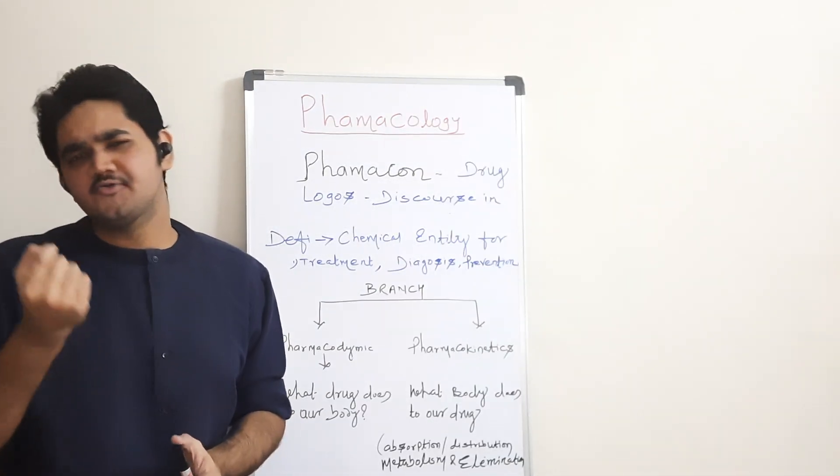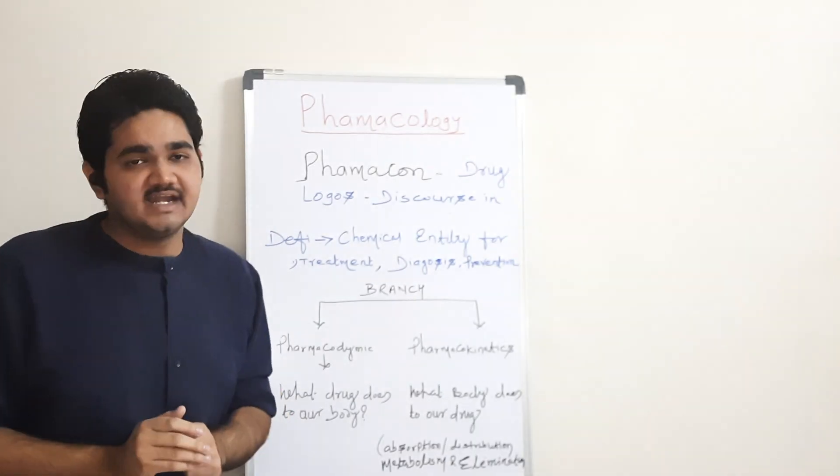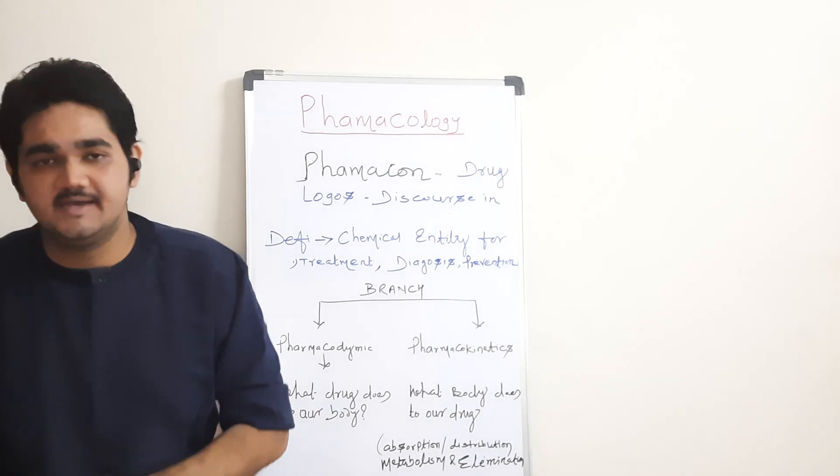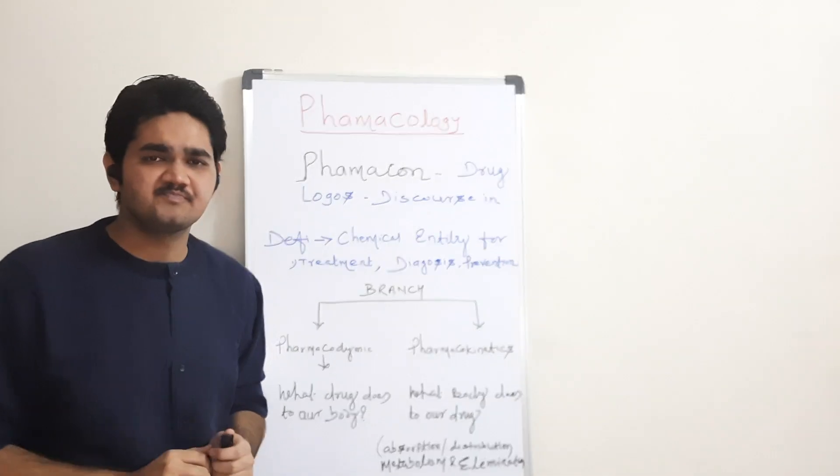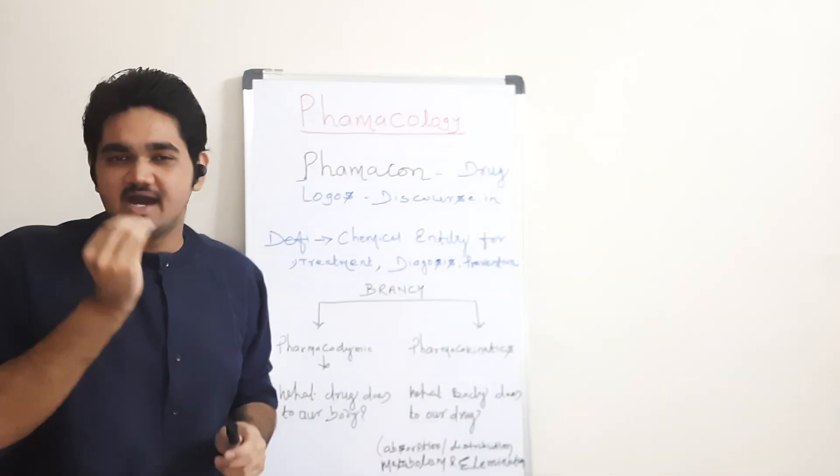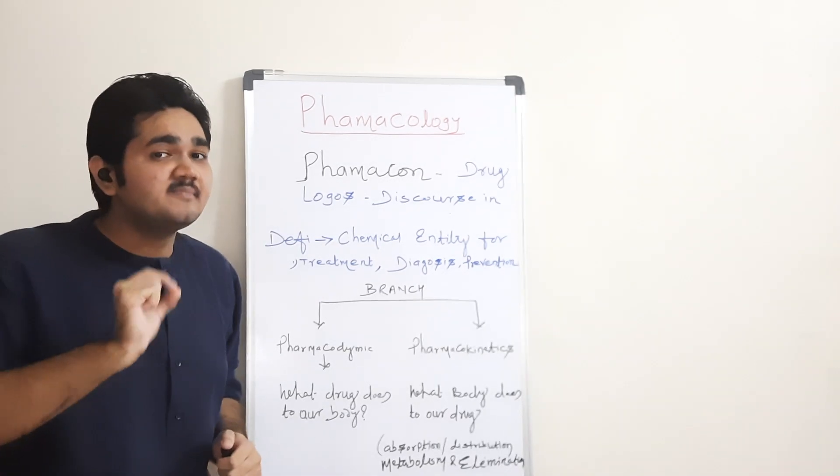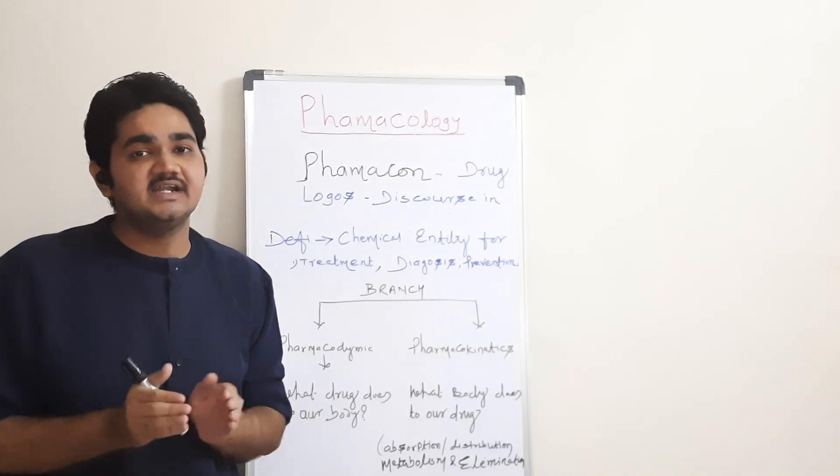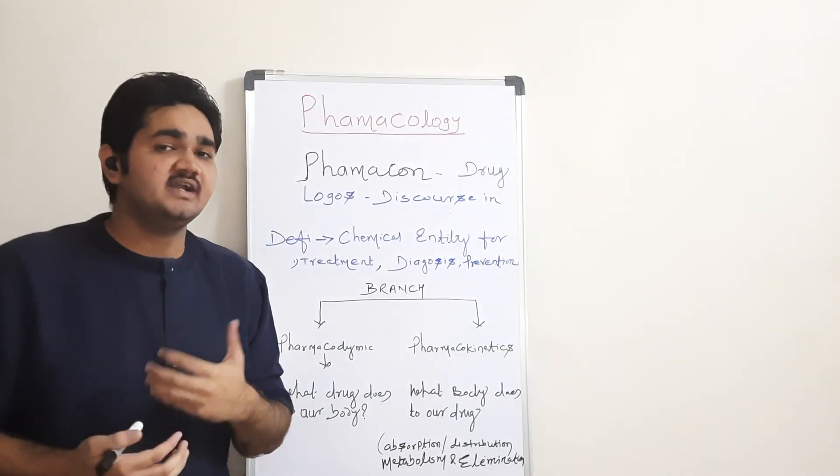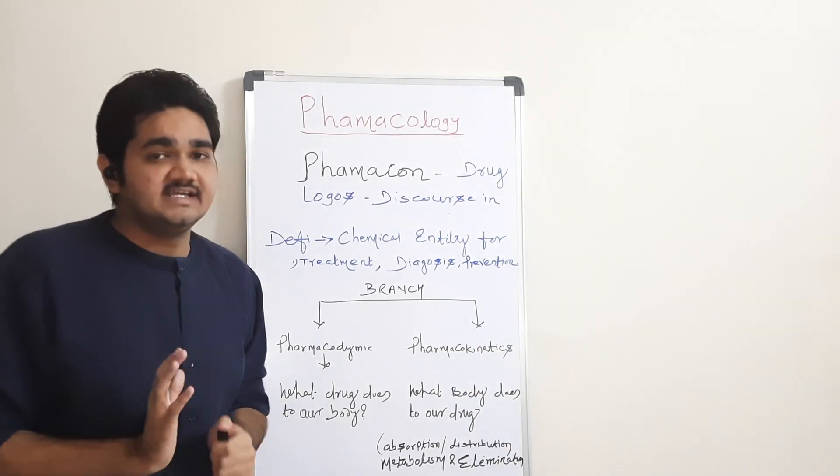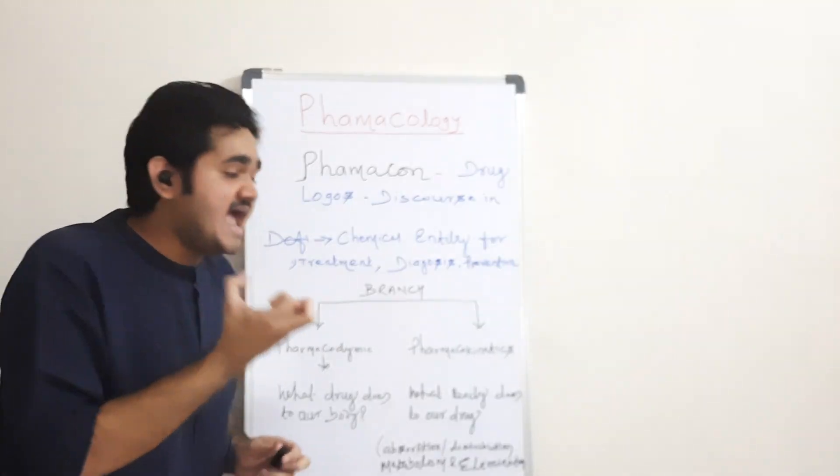Then what do we mean by pharmacokinetics? To understand pharmacokinetics, let's assume we took that drug orally. After taking it orally, that drug will go inside my stomach. After going into the stomach, it will be acted upon by different enzymes, different chemicals and digestive juices. Finally, the drug will be absorbed.